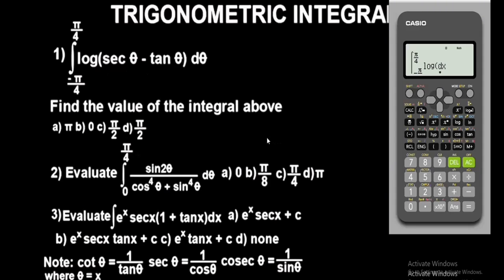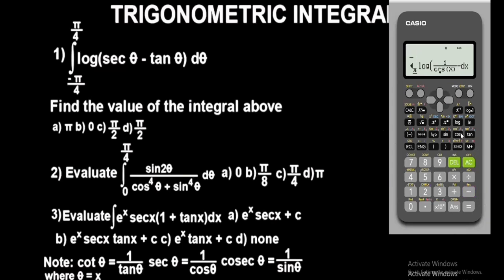Note that sec is not on the calculator. Sec theta is the same as 1 over cos theta, cosec theta is 1 over sin theta, and cot theta is 1 over tan theta. Since there is no sec on the calculator, we replace sec with 1 over cos x. So in fraction form, we do 1 over cos x — press Alpha and the x button — then close the brackets.